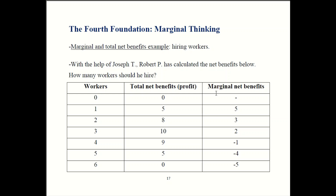The marginal net benefits show how profit changes when you add one more worker. If you go from zero workers to one, profit goes up by five. If you have one worker with five dollars in profit and you hire a second, you'll have eight dollars in profit — that means profit goes up by three. Similarly, eight plus two is ten, and ten minus one is nine. That's how this table is constructed.